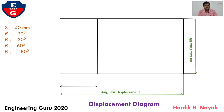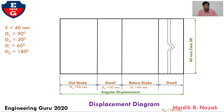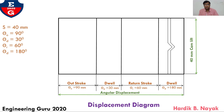First, draw theta-o equal to 90 degrees. Second, dwell of 30 degrees. Third, return stroke of 60 degrees. And finally, dwell theta-d equal to 180 degrees, indicated by a broken section line.